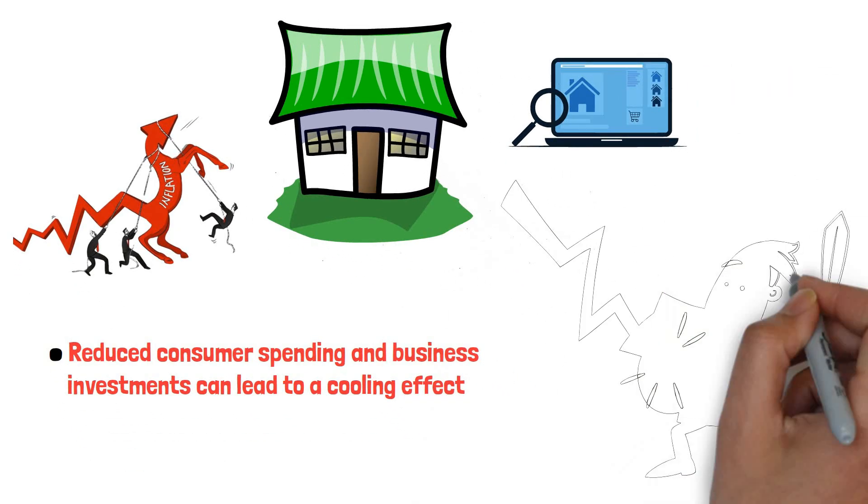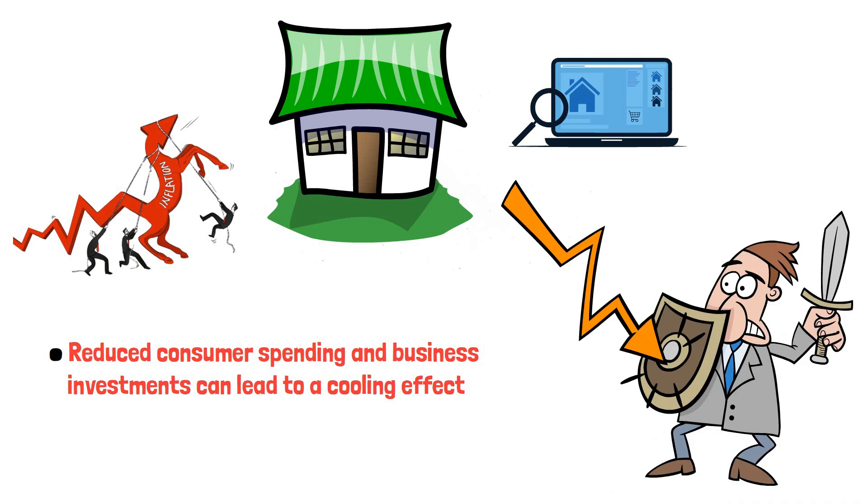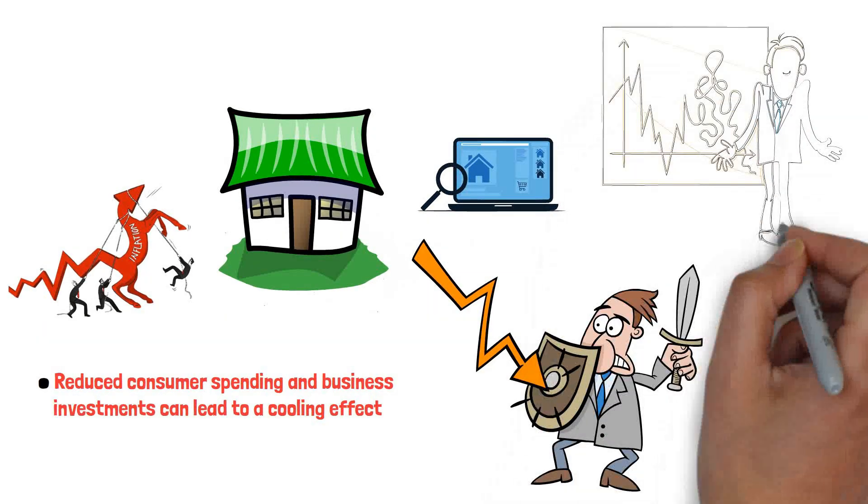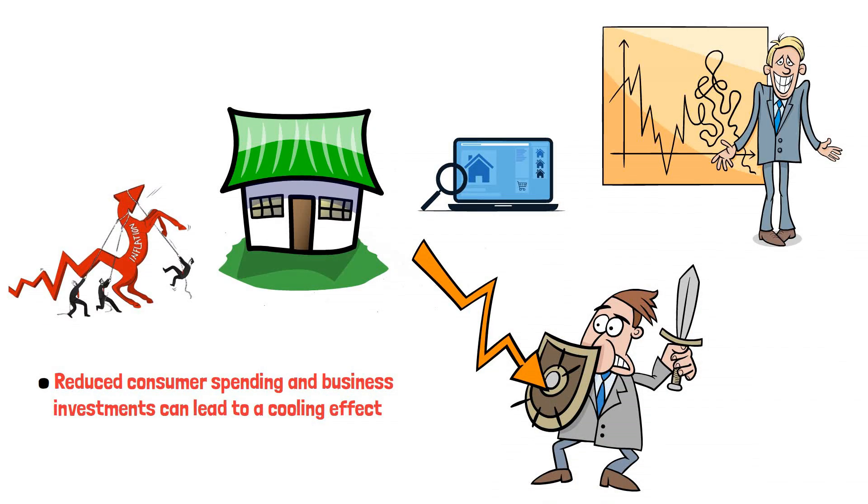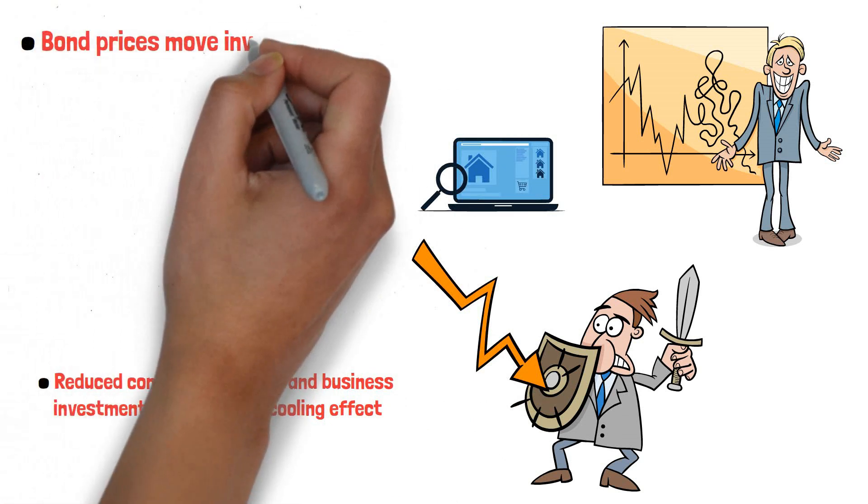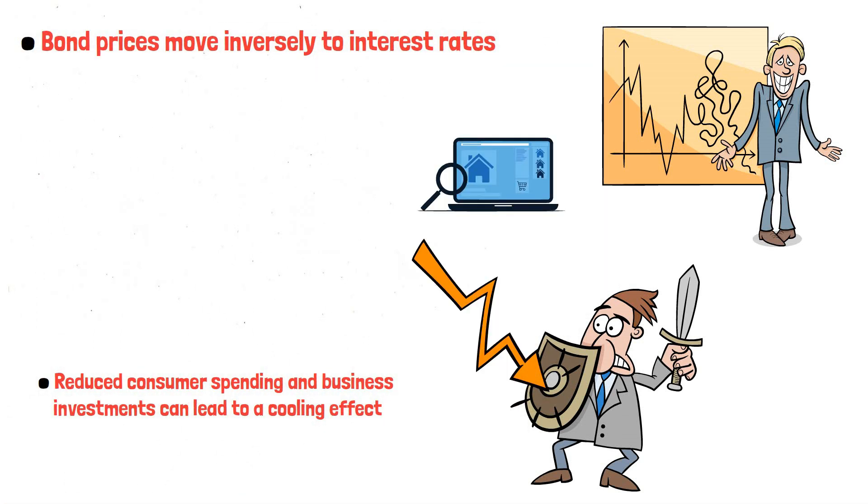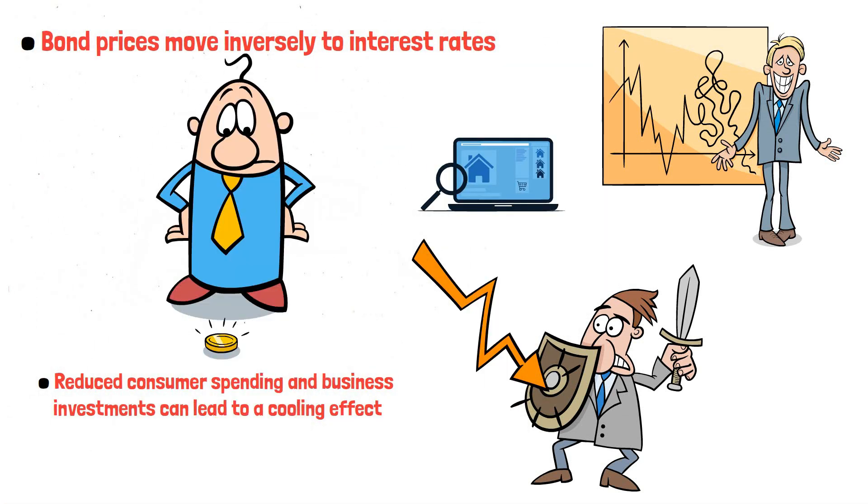The real estate market may experience a slowdown due to higher mortgage rates affecting home sales and construction. Investors should brace for potential turbulence in stock markets. Higher rates can lead to volatility as risk-return profiles are reassessed. Bond prices move inversely to interest rates.